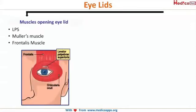The first adnexa is the eyelids. The muscles opening the eyelids are the levator palpebrae superioris, then the Muller's muscle, and the last one is the frontalis muscle. Please try to remember this image — it will help you understand the various surgeries we are going to do in ptosis.